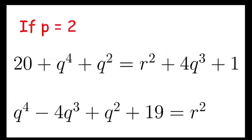For the first case, when p equals 2, I can rewrite the equation as follows, and it will become q^4 - 4q^3 + q^2 + 19 = r^2. In other words, the polynomial above in q at the left-hand side is a perfect square.